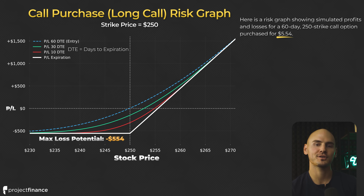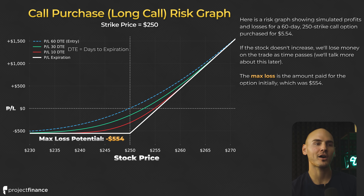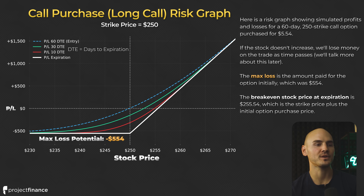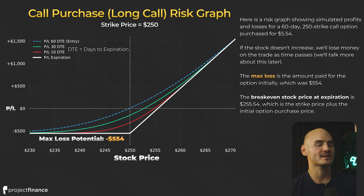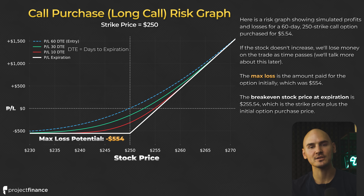If the stock price does not increase, we'll lose money on the trade as time passes. The maximum loss when you buy a call option is the amount you pay for the option, which is $554 in this example. The breakeven stock price at expiration is $255.54, which is the strike price plus the initial option purchase price. One of the downsides of buying options as opposed to buying shares of stock is we need the stock price to move in our favor by a certain amount for us to get our money back by the time of expiration. For every option position, there's a breakeven at expiration — the stock price that leads to no profit or loss on your trade.